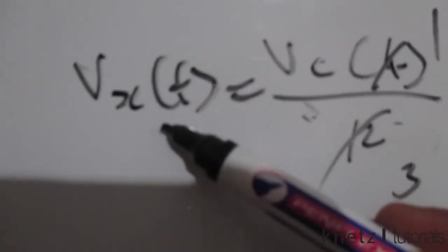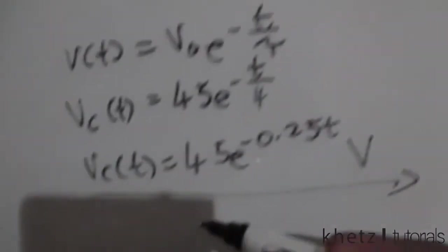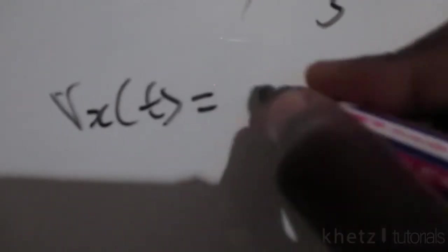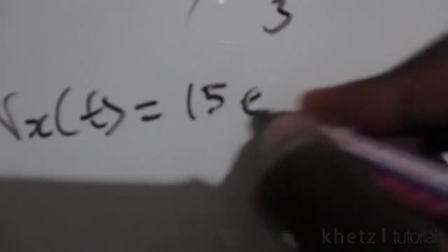So Vx(t) equals Vc divided by 3. Here we have 45, so what is 45 divided by 3? It's 15, which means our Vx(t) is therefore equals to 15 e to the minus 0.25t volts. That is our Vx.